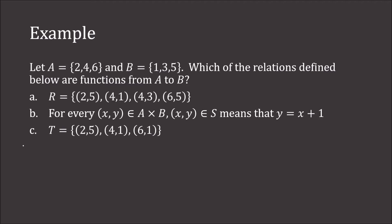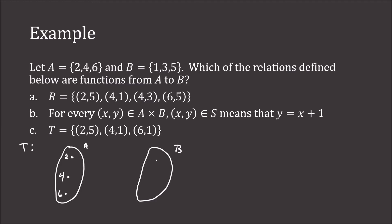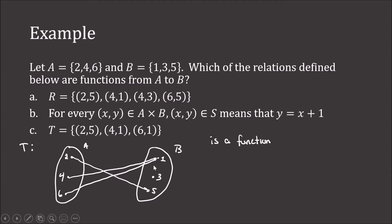Finally, consider T. Drawing the arrow diagram: 2 maps to 5, 4 maps to 1, and 6 maps to 5. T is a function — every element of A is mapped to something, and specifically to a unique element. Two elements mapping to the same output is not a violation of property 2, and nothing being mapped to 3 is not a violation of property 1.